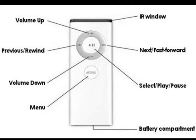The menu button is in the lower part of your remote, the select play pause button is in the center, and the four buttons are in the larger circle. The button on the right is the next fast forward button, the button on the left is the previous rewind button, and the buttons on the top and bottom are volume controls.